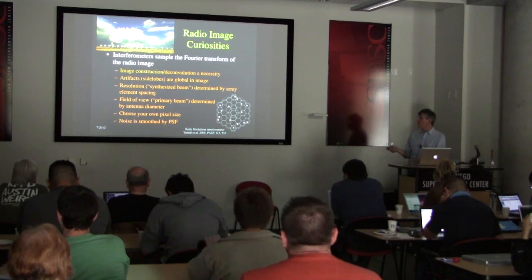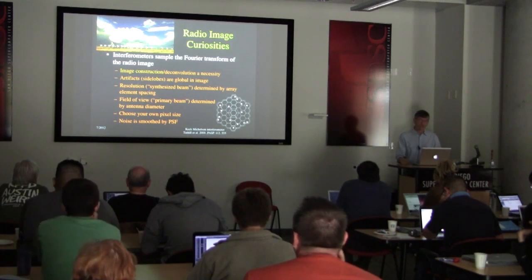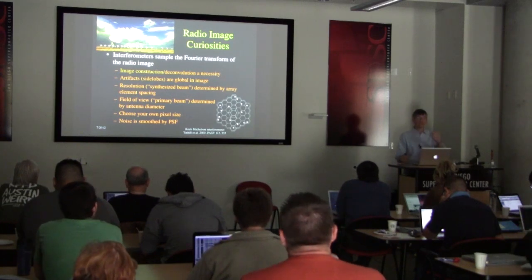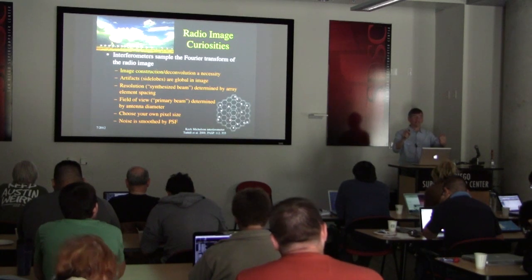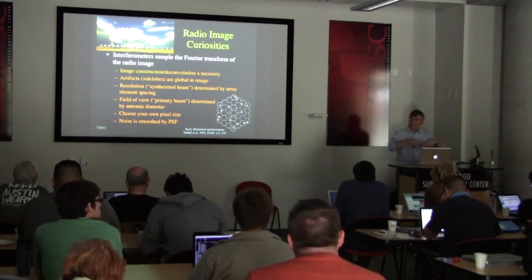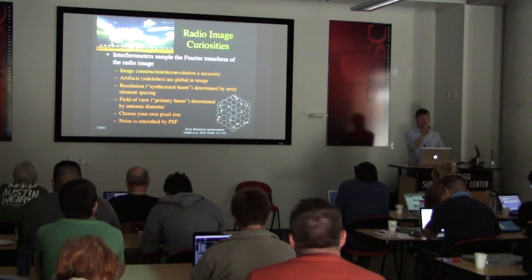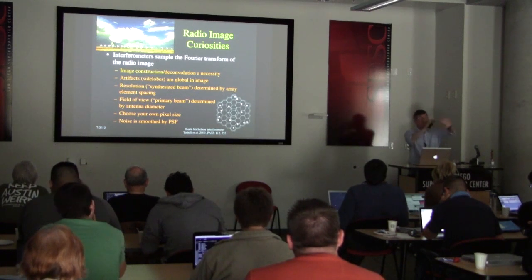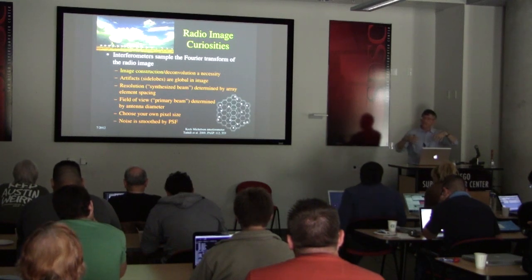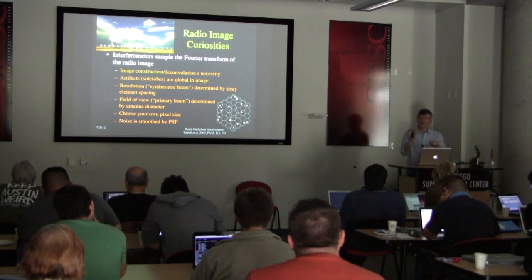Artifacts in radio images are global — they extend all the way across the image. This relates to Fourier transforms: changing a single Fourier coefficient makes a global change in the image. Not only does the point spread function extend globally, but noise is also global. A single noisy measurement introduces waves across the entire map, unlike the localized pixel-by-pixel noise in optical images.